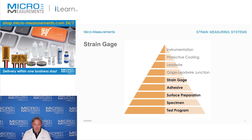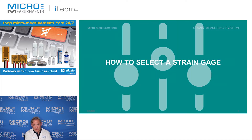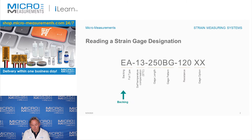We're going to get started with how to select the strain gauge, and basically what we're going to do is show you what the part number means. We'll go through each step of it, discuss what each number or letter means, and then how you might apply it to your application. The first slide shows an entire part number for an EA series gauge. You read the part number from left to right — in this case it's EA-13 250BG-120, and the XX represents any gauge options you might have on the strain gauge. We're going to start from the left and work our way right.